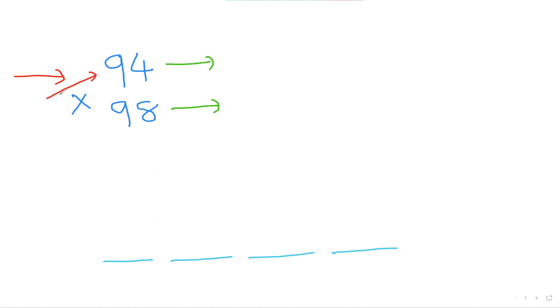What is the difference of 94 from 100? So that difference is 6. Now what is the difference of 98 from 100, which is 2. Now your answer is going to be a four digit number which you can see here.